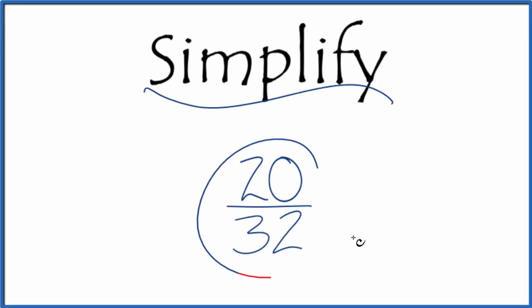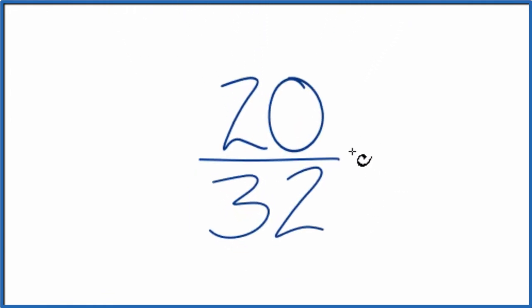Let's simplify the fraction 20/32. What we need to do is find another fraction that's equal - an equivalent fraction to 20 over 32 that's been reduced or simplified down to the lowest terms.